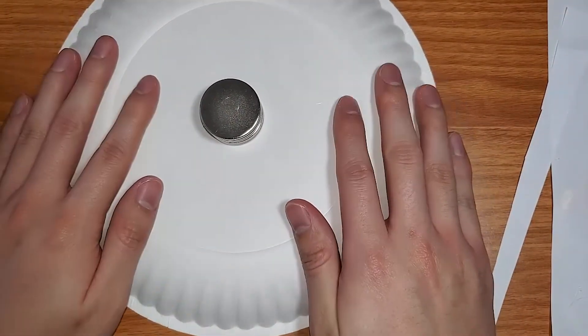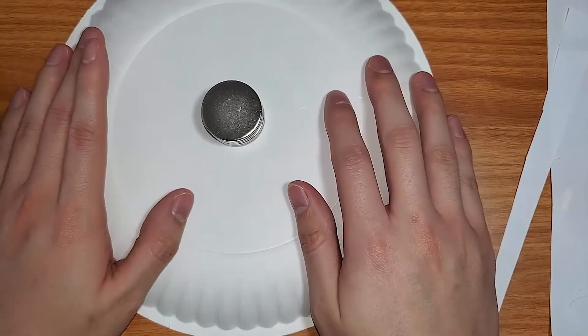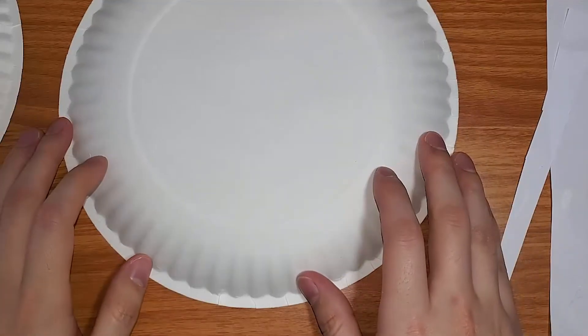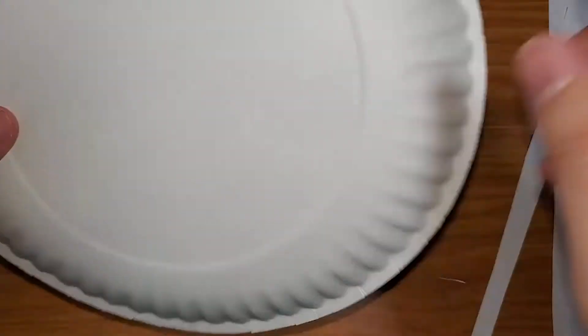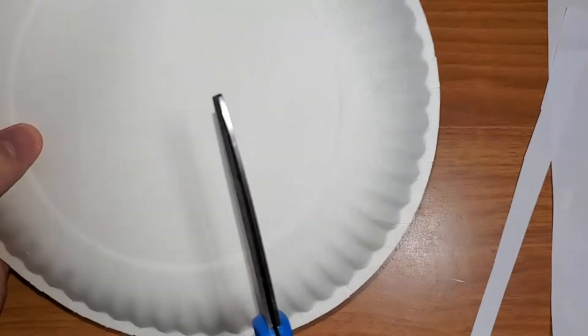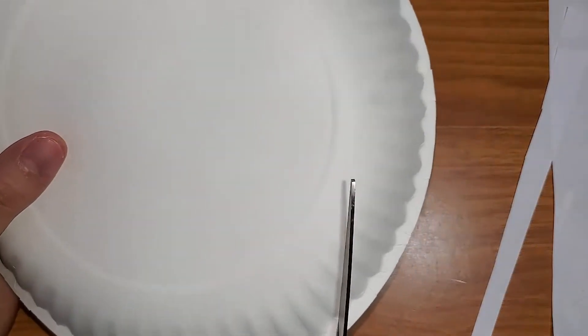Our bottom half of speaker is also going to need a suspension system to deal with the vibrations. In order to create the suspension system, all we have to do is again take another piece of paper plate and I'm just going ahead and cut out the flat portion of it.